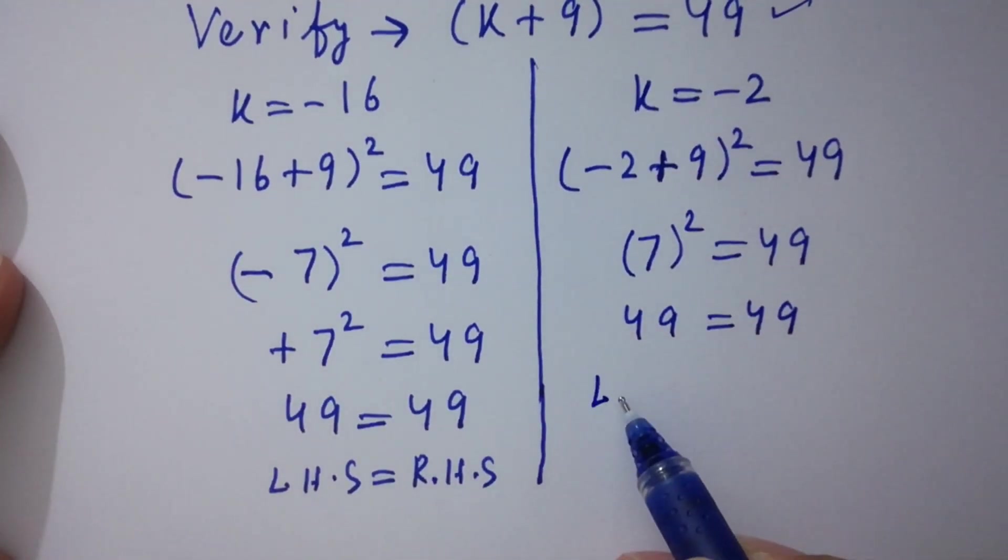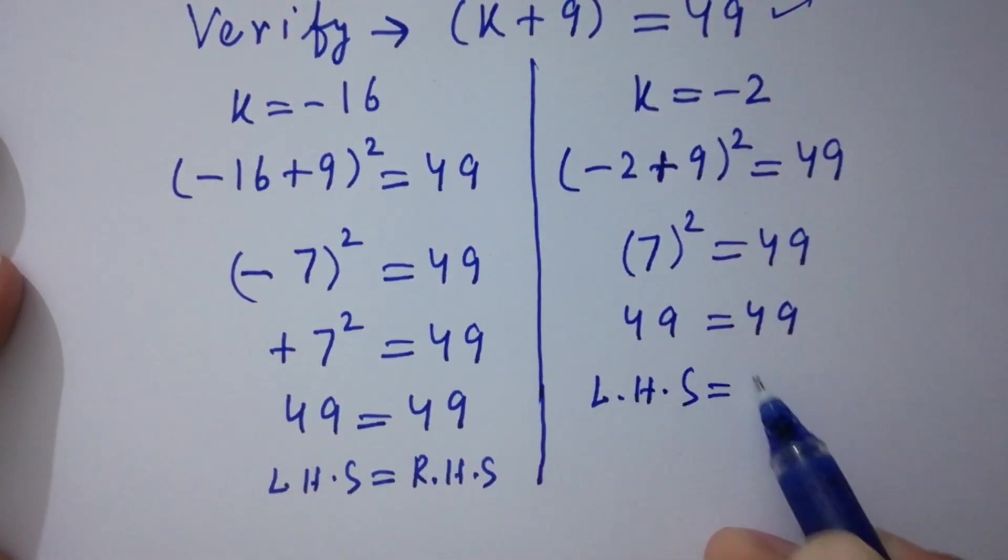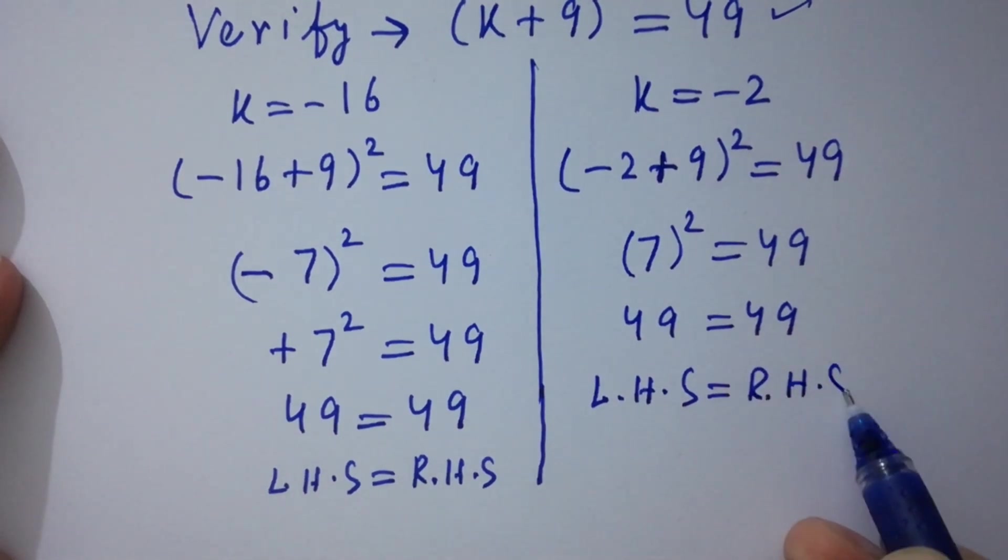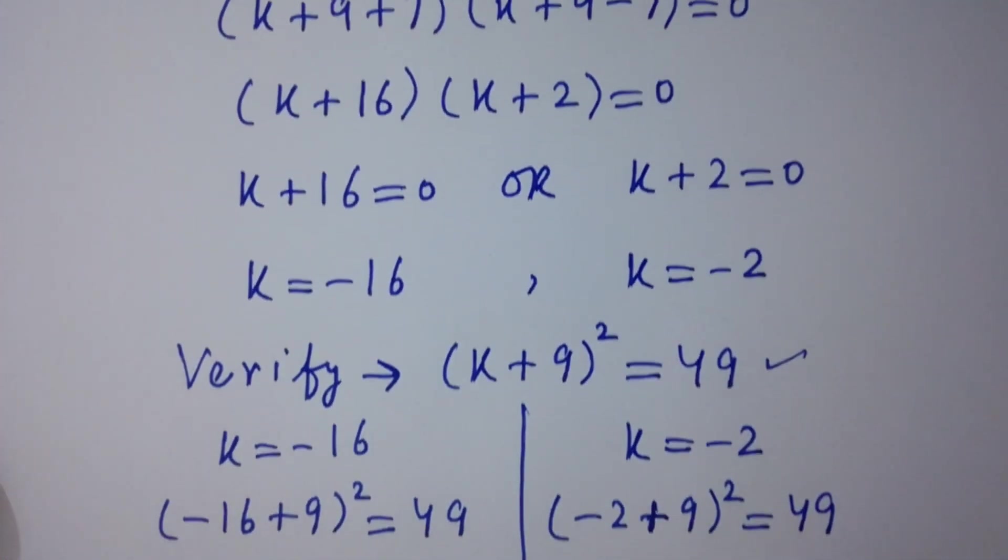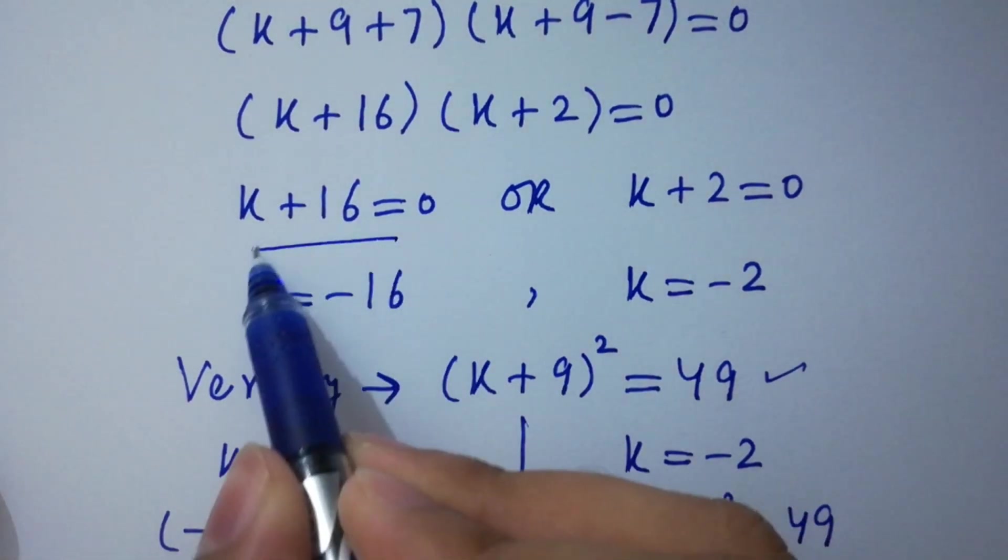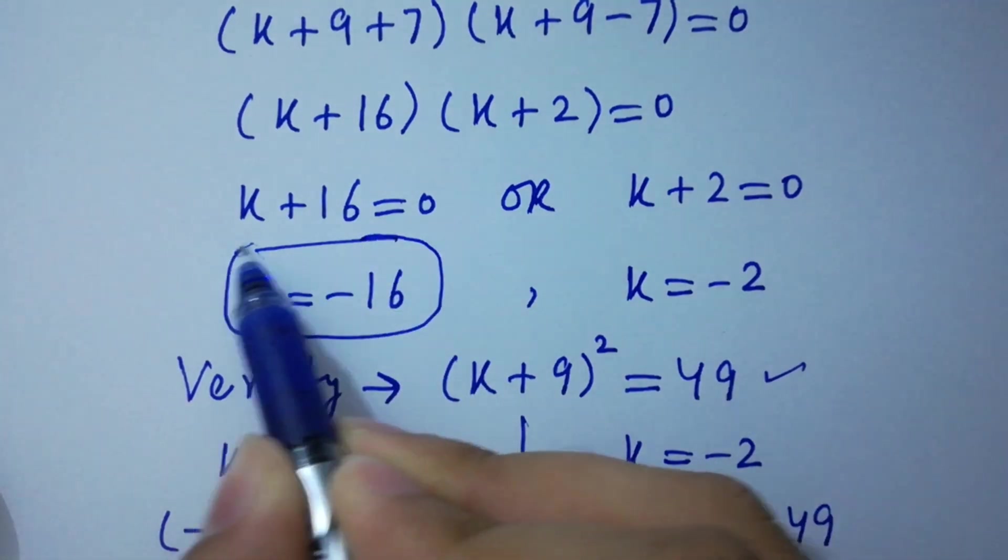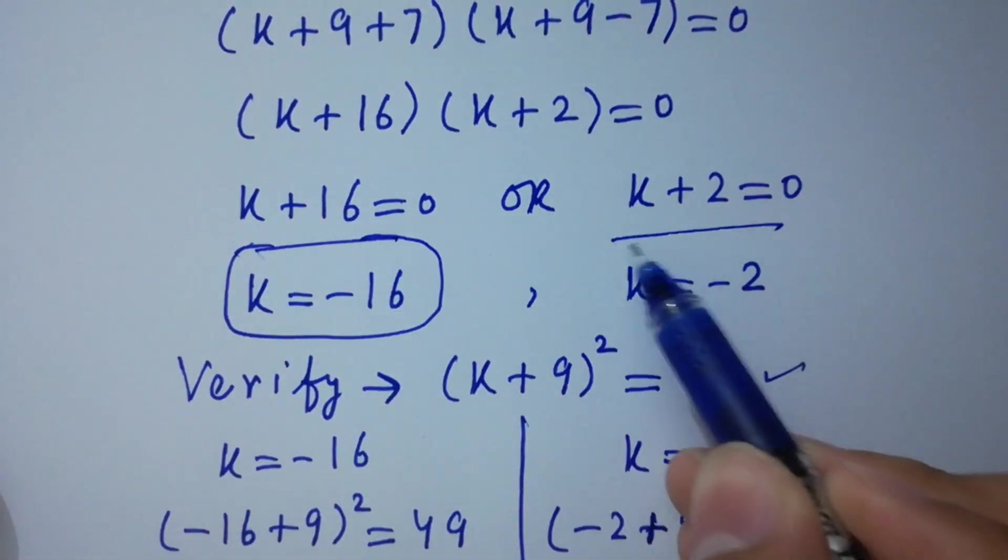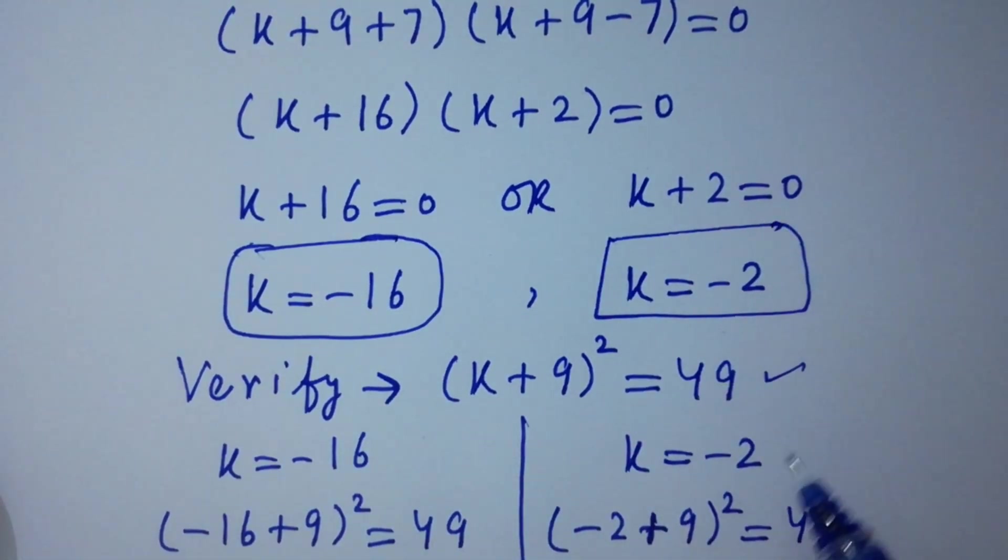Again, left hand side equal to right hand side, which shows that the values of k = -16 and also k = -2 satisfies this equation of (k + 9)² = 49.